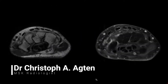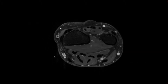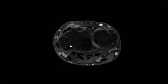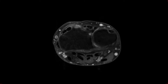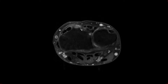Before showing some cases with distal intersection syndrome, let's look at the anatomy first. At the level of the radiocarpal joint you have the different extensor compartments: the first one, second one, third one, fourth one, fifth one, and sixth one.